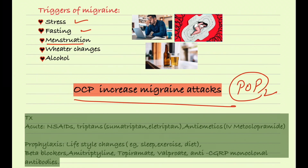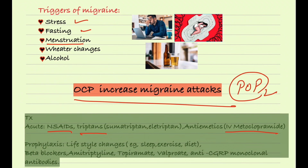OCPs are also associated with increased risk of stroke. For acute migraine treatment we use NSAIDs, triptans such as sumatriptan and eletriptan, and antiemetic drugs like IV metoclopramide. For prophylaxis, patients should change their lifestyle — sleep, exercise, and diet. We also use beta blockers, amitriptyline, topiramate (an anti-epileptic drug), valproate, and anti-CGRP monoclonal antibodies as preventive agents.